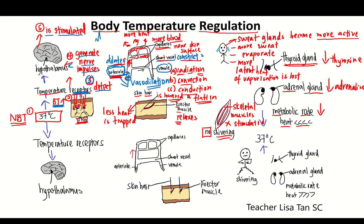All these actions are to bring our body temperature back to normal, which is 37 degrees Celsius. When you do vigorous exercise, your body temperature increases. The temperature receptor in the skin detects the changes in body temperature, and the receptor generates nerve impulses. The nerve impulses are sent to the hypothalamus, and the hypothalamus is stimulated. From the hypothalamus, nerve impulses are sent to the relevant parts of the body, such as the muscles, glands, and skin.